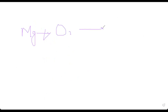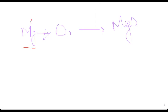Magnesium plus O₂ gives magnesium oxide. You have to check what is getting oxidized and what is getting reduced. Magnesium is alone here — monoatomic — so what is its oxidation state? Zero. Because magnesium is not attracting electrons from anywhere; it is alone and neutral. This is O₂ — a diatomic molecule. Its oxidation state is also zero. For monoatomic elements and diatomic molecules, oxidation state is zero.